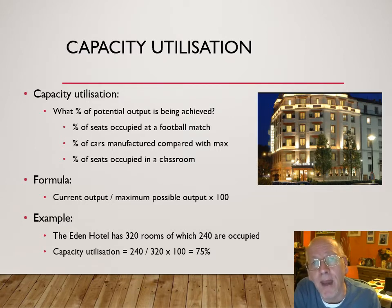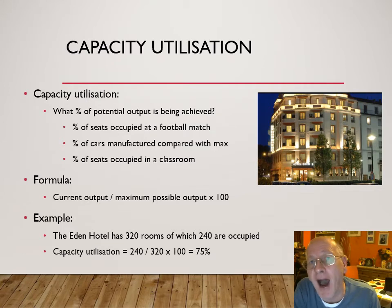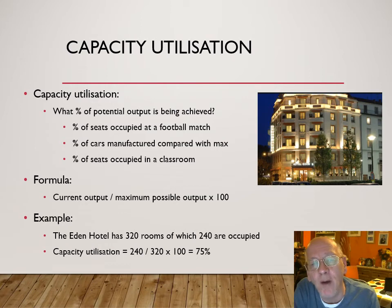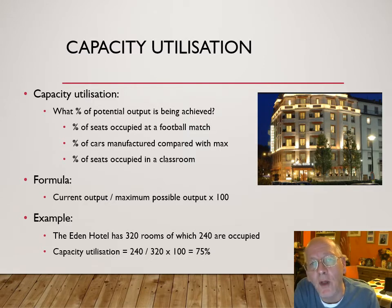So what is capacity utilization? It's the extent to which your capacity is currently being met. If your pint pot is half filled, your capacity utilization is 50%. If you're watching a football match and a third of the seats are unfilled, you've got a capacity utilization of about 66-67%. The formula is straightforward: current output divided by capacity, multiplied by 100%. For example, a hotel with 320 rooms and 240 occupied has a capacity utilization of 75%.